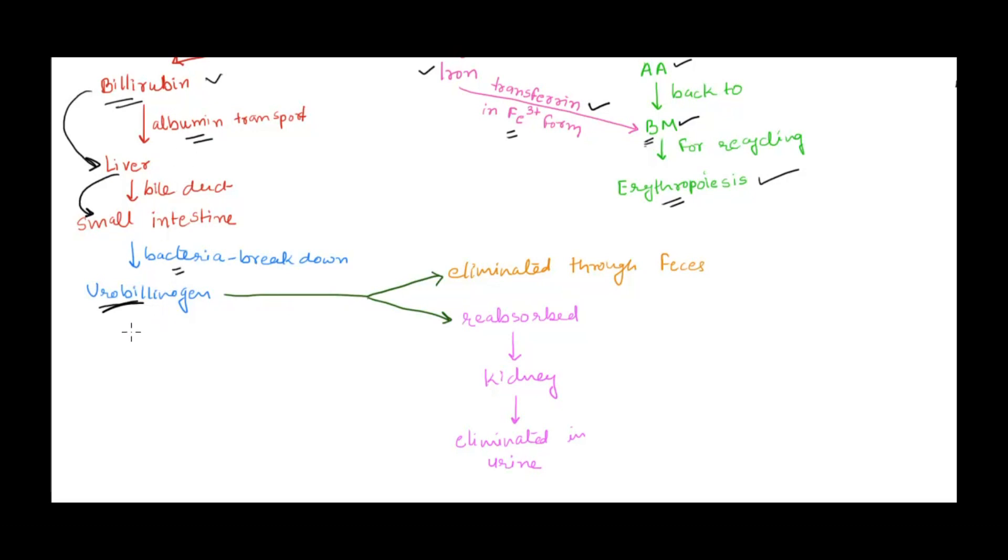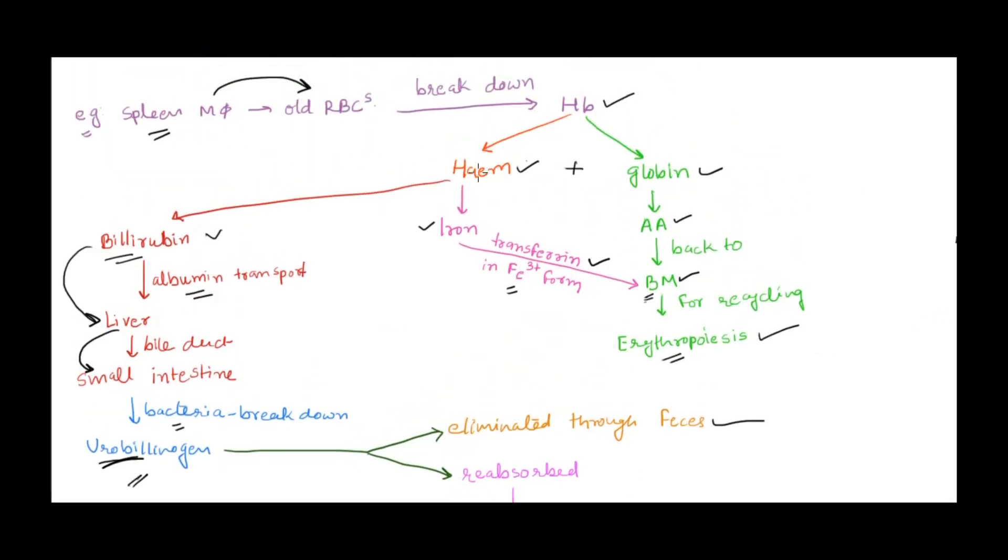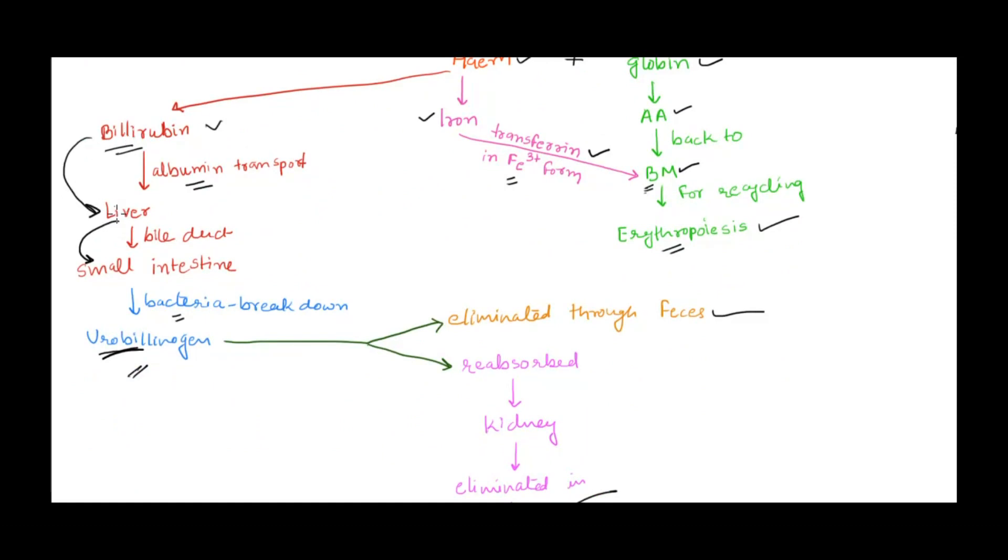How to eliminate this urobilinogen? Either it's simply eliminated through feces, or it's reabsorbed and through the kidney eliminated in urine. It's easy to understand - hemoglobin breaks into heme and globin. Globin, as amino acids, goes back to bone marrow to get recycled. Heme breaks into bilirubin and iron. Iron again goes to bone marrow, recycled in erythropoiesis.